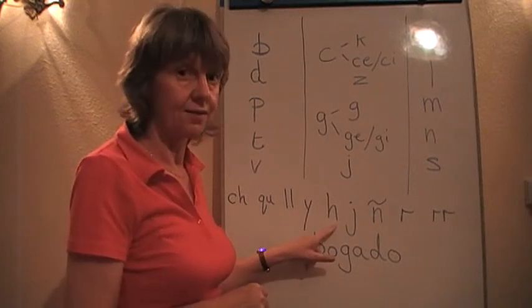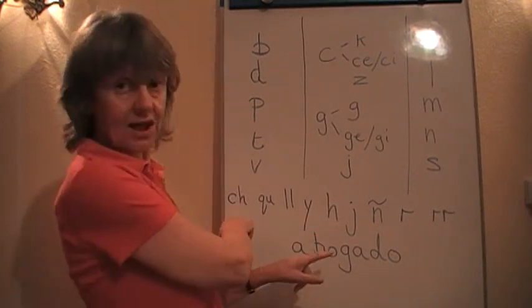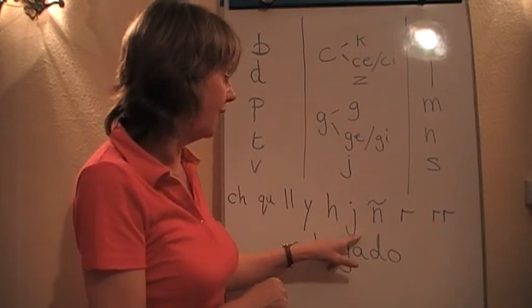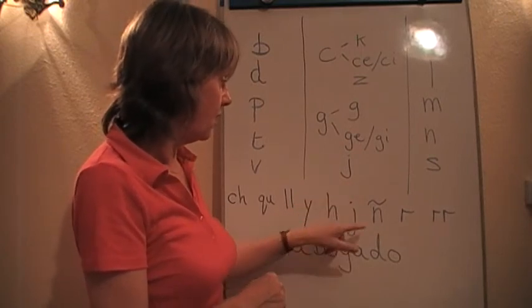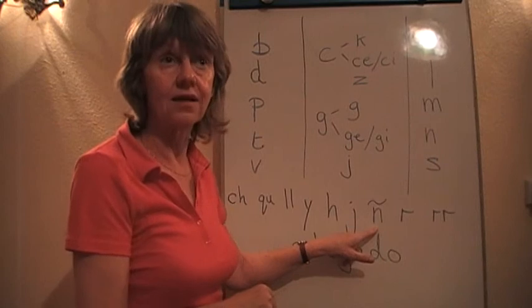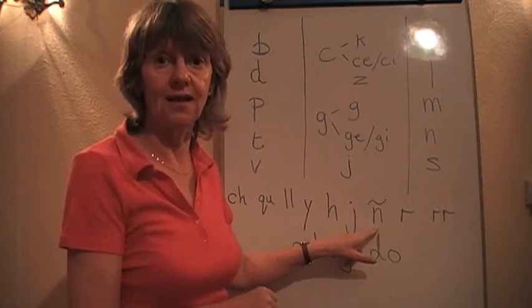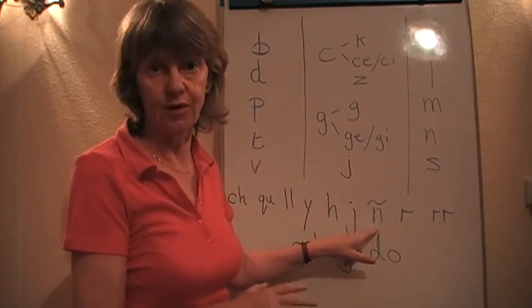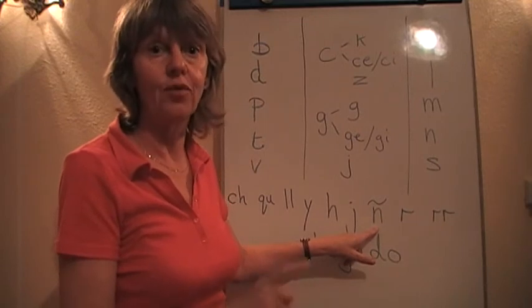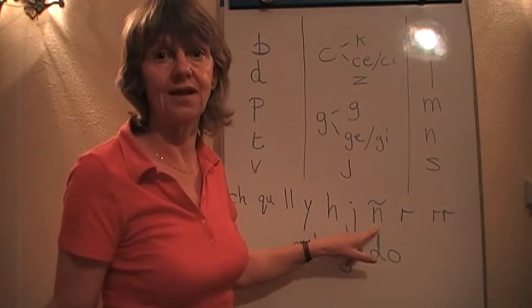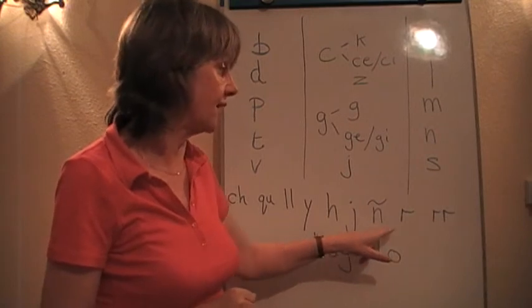The H is silent, except we're into the CH. The jota I've already mentioned. The eñe is a unique Spanish letter. Mañana is a perfect example. España. We must realize it's a separate letter. It's not an N with a squiggle. It's a ñ sound.